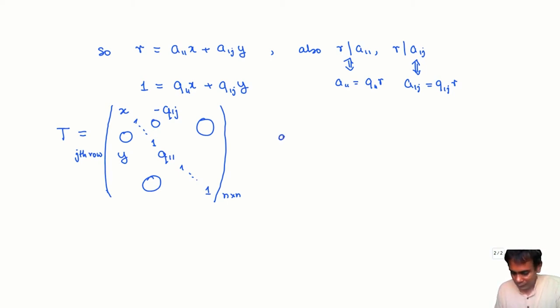Then note that determinant of T is equal to, well it is basically the identity matrix. The only thing that matters is the determinant of this 2 by 2 block. So it is x times q_11 plus y times q_1j. So determinant of T is 1, which implies that T belongs to GL_n(R).